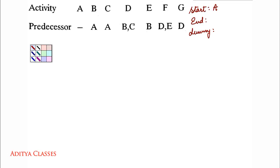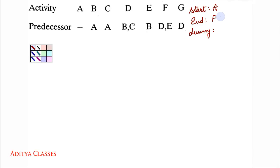Who ends the network? All the activities that are not listed in the predecessor column will end the network. Let us check — A, B, C, D, E are all present in the predecessor list. So F and G will be ending the network. This we know before even starting to draw.